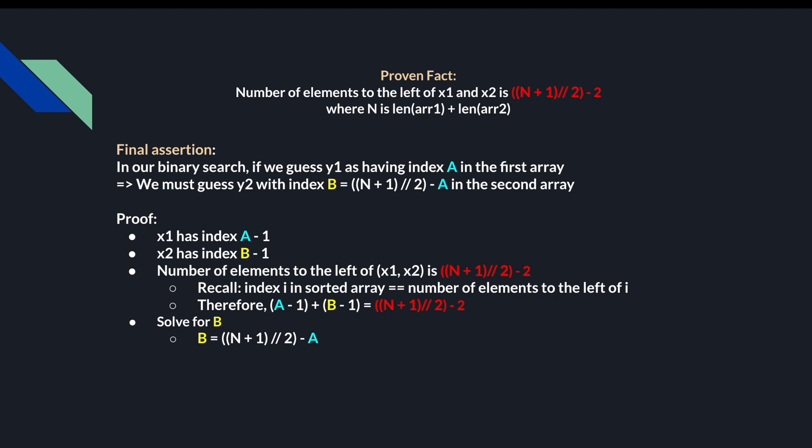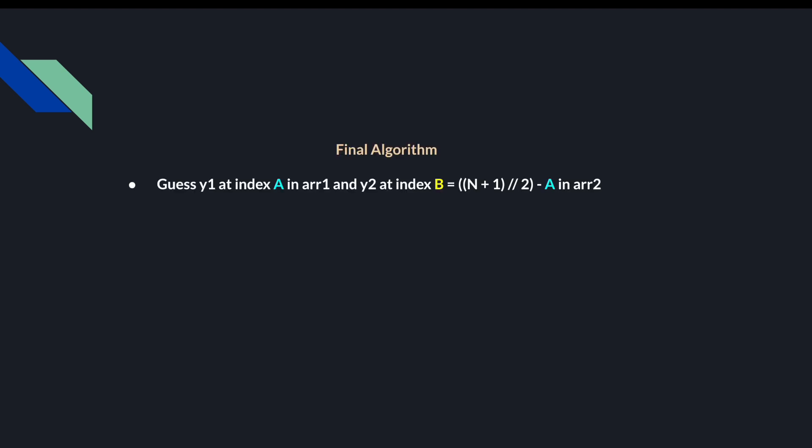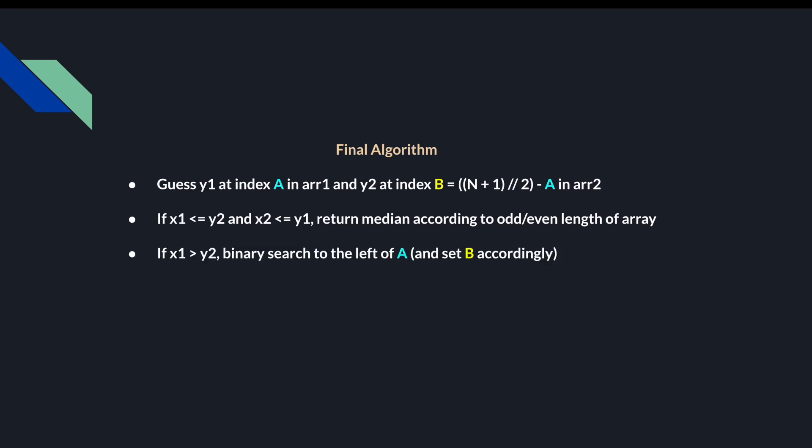So now we have all our missing pieces. We'll guess an index a in the shorter array, and define b as floor((N + 1) / 2) minus a. If x1 ≤ y2 and x2 ≤ y1, then all our conditions have been met and we terminate. Otherwise, if x1 is greater than y2, we binary search to the left of a. Otherwise, we search to the right of a. That's our solution sketch.